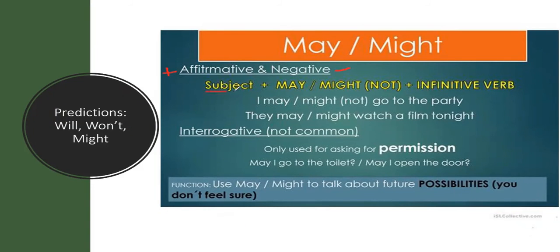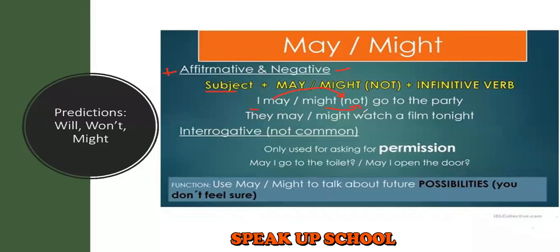We have our subject, then may or might, or may not or might not, depending on what you want to say, and then the infinitive verb. For example: 'I may go to the party,' 'I may not go to the party,' 'I might go to the party,' 'I might not go to the party.' We do not abbreviate these. It is a possibility that depends on something else — for example, 'I might go to the party if my mother gives me permission,' or 'I might not go to the party if my father doesn't give me money.'